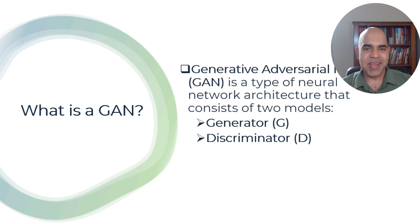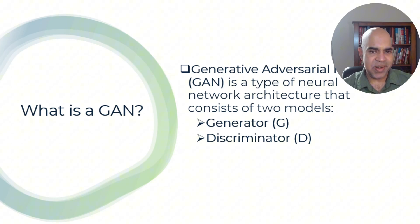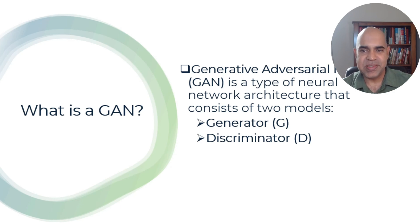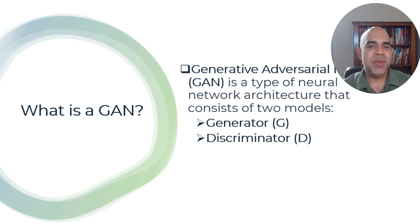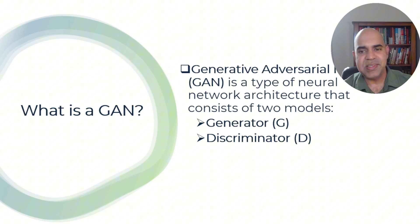So what is a GAN? A Generative Adversarial Network is a type of neural network architecture that consists of two models working against each other in an adversarial manner. Ian Goodfellow and his collaborators first introduced the GAN framework in 2014, and since then it has revolutionized the field of generative modeling.